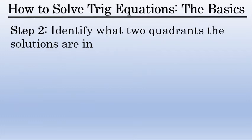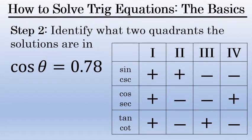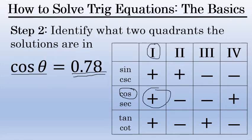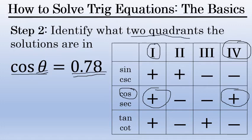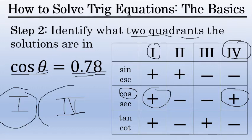Step two is to identify what two quadrants the solutions are located in. In this trig equation, like most trig equations, there will be two solutions between 0 and 2 pi radians. Using the sign table, cosine of theta equals positive 0.78. The cosine is positive in the first quadrant and the fourth quadrant, and negative in the second and third quadrants. So the two solutions will be located in the first quadrant and the fourth quadrant.